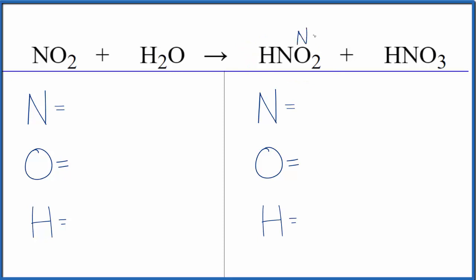You'll see the equation written as NO2 plus H2O yields NO plus HNO3, but in this video we're going to balance this equation. Let's count the atoms up: one nitrogen, two oxygens.